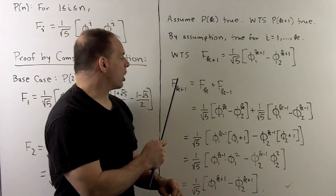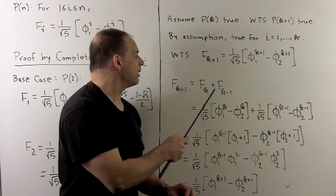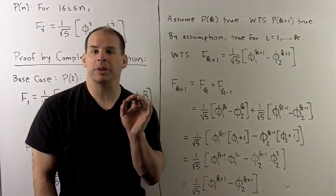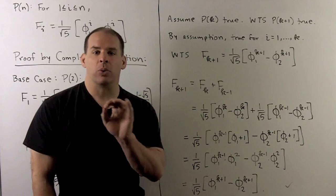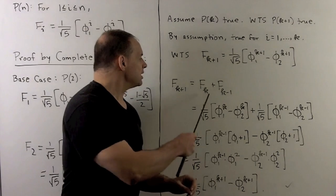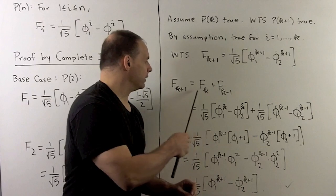Now, we'll start by just using our original definition. So, f sub k plus 1 equals f sub k plus f sub k minus 1. This is where the complete induction comes in. If I had started with a normal induction, I would only be able to substitute for this piece. But, because I use complete induction, I know our formula is going to hold for both of these.